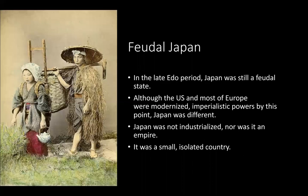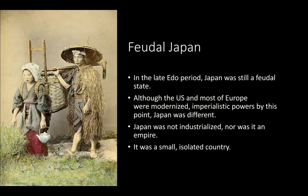During the late Edo period, before the Meiji period, Japan was still a feudal state controlled by the shogunate. Although the U.S. and most of Europe was modernized, Japan was different. It was not industrialized, and it was just a small, isolated country, as you can see in the picture of a couple of peasant Japanese people.